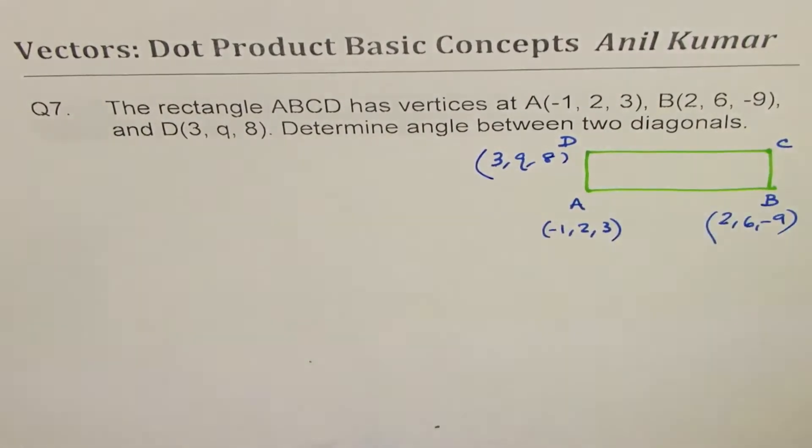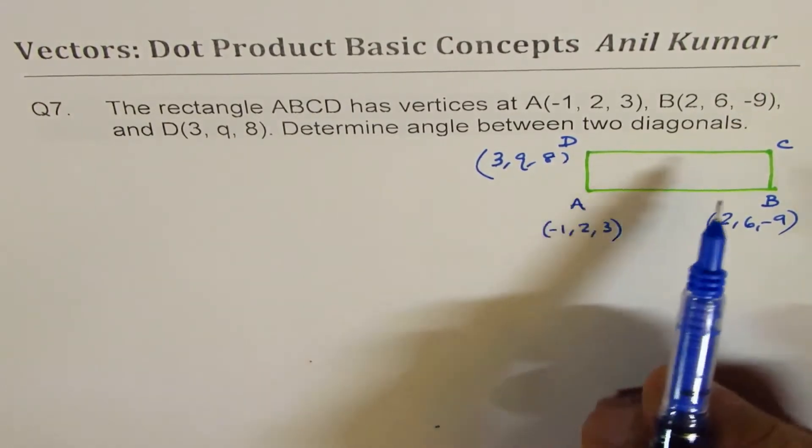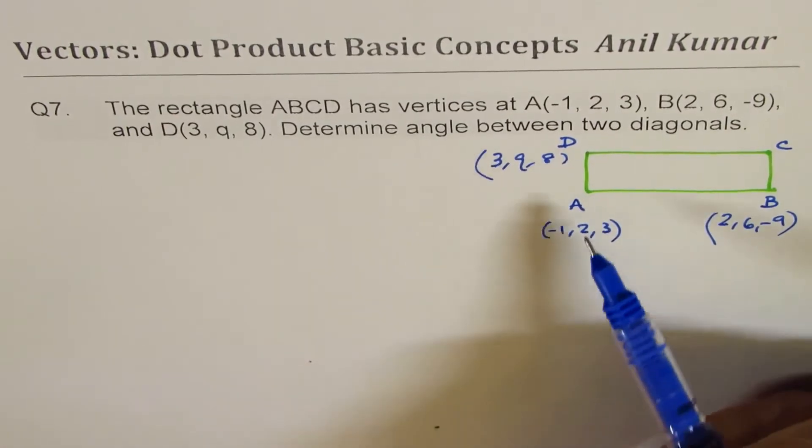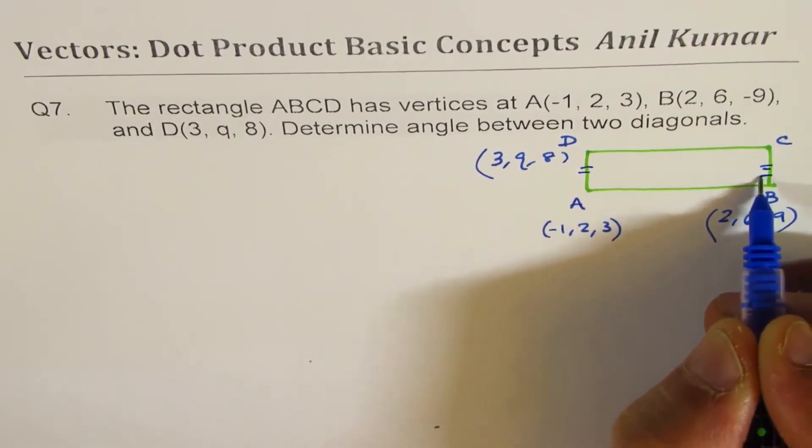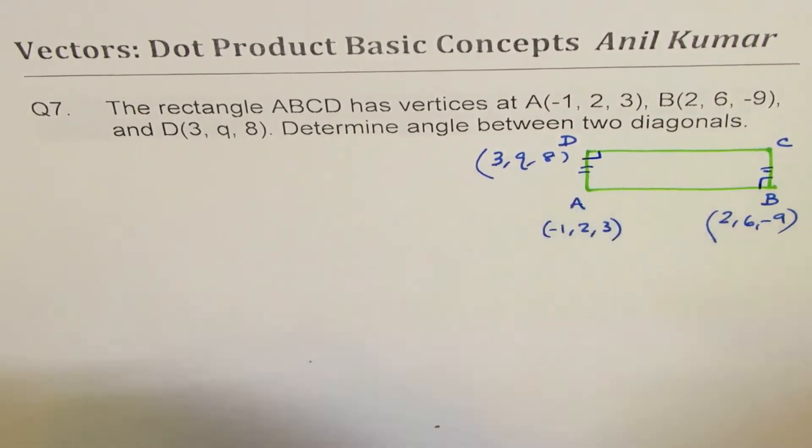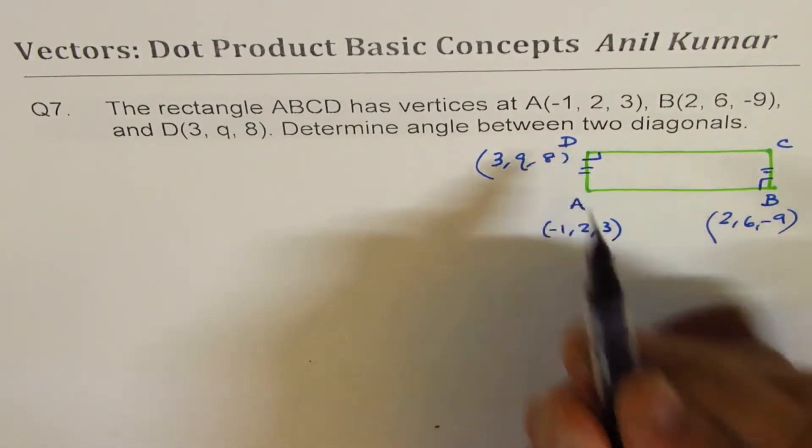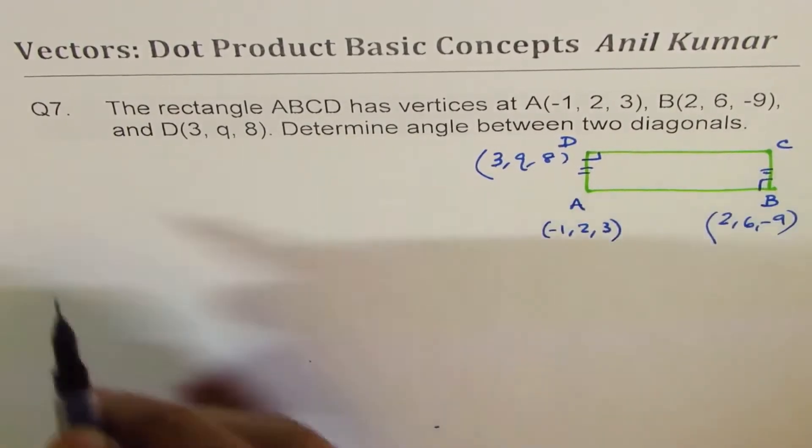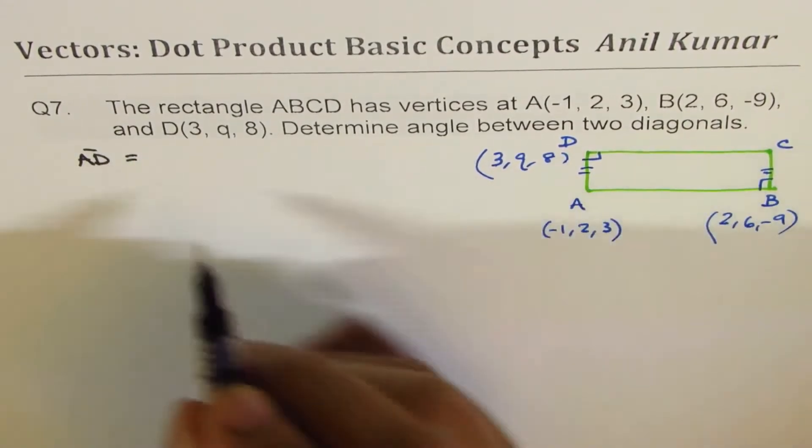We have to find what C is. Now there are a couple of ways to do it. Easiest way is we can say that these two sides are equal and they are 90 degrees. So we know that AD is same as BC.